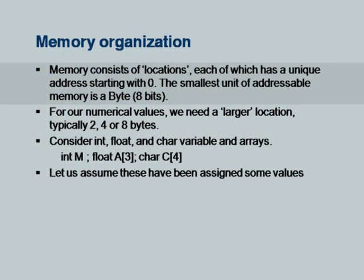I am talking about addresses, not about what is contained inside a memory location. Typically the smallest unit of memory is a byte, and most machines are called byte-addressable machines. If a C compiler is ported onto a machine, it requires that memory be addressable at the level of a byte. However, for numerical values such as float or integer, we cannot fit our values in 8 bits, and therefore we typically require 2, 4, or 8 bytes depending on whether you have a short, long, or double float value.